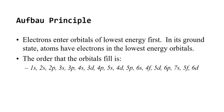The Aufbau principle — which means 'filling' in German — states that electrons fill orbitals of lowest energy first. When there's a position of lower energy around an atom, that's where electrons prefer to go; they will release energy to get there. In its ground state, an atom has electrons in the lowest energy orbitals only. Keep in mind that once you get to the D sub-shell, the energy level drops by one, and for the F sub-shell by two.